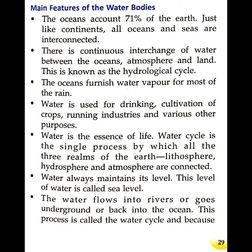The oceans account for 71 percent of the earth. Just like continents, all the oceans and seas are interconnected with each other. There is a spontaneous interchange of water between the ocean, atmosphere, and the land. This is known as the hydrological cycle. The ocean furnishes water vapors for most of the rain.